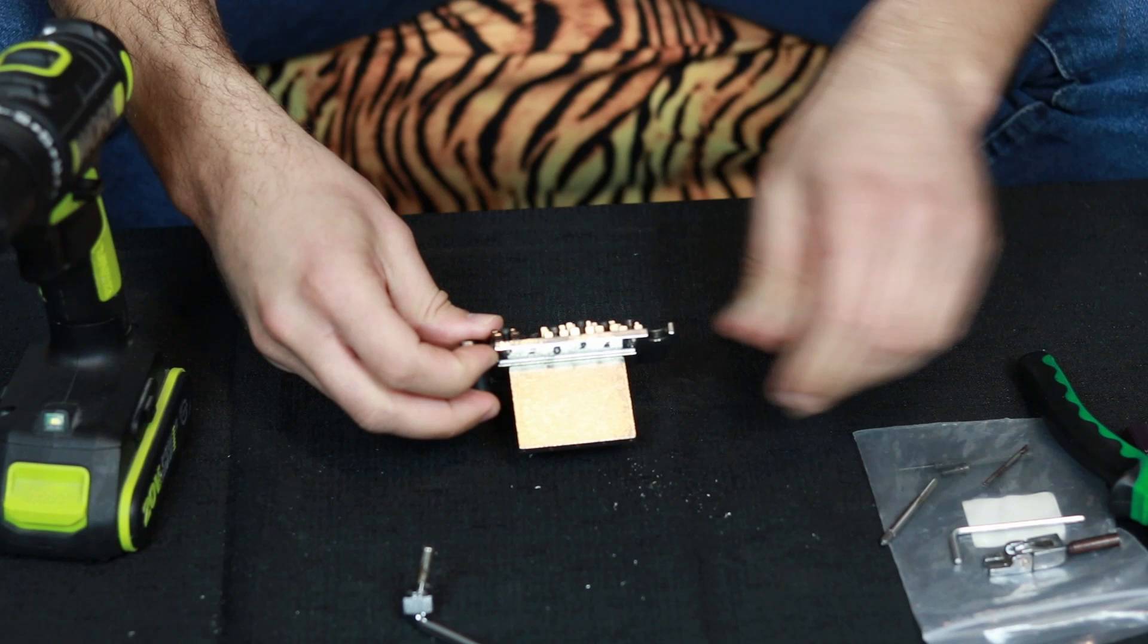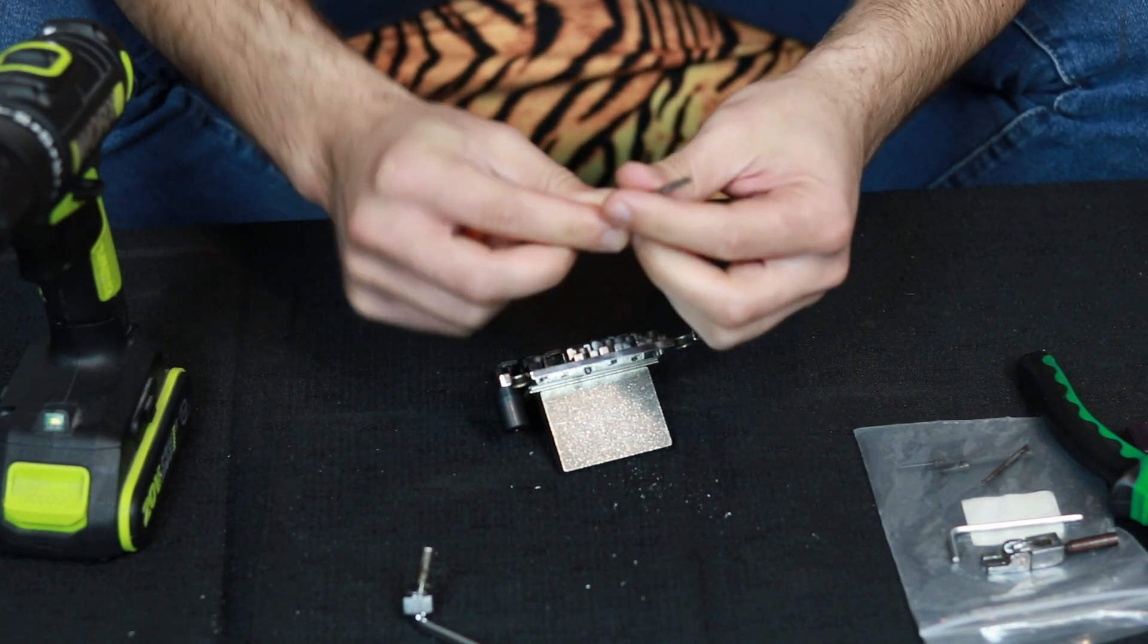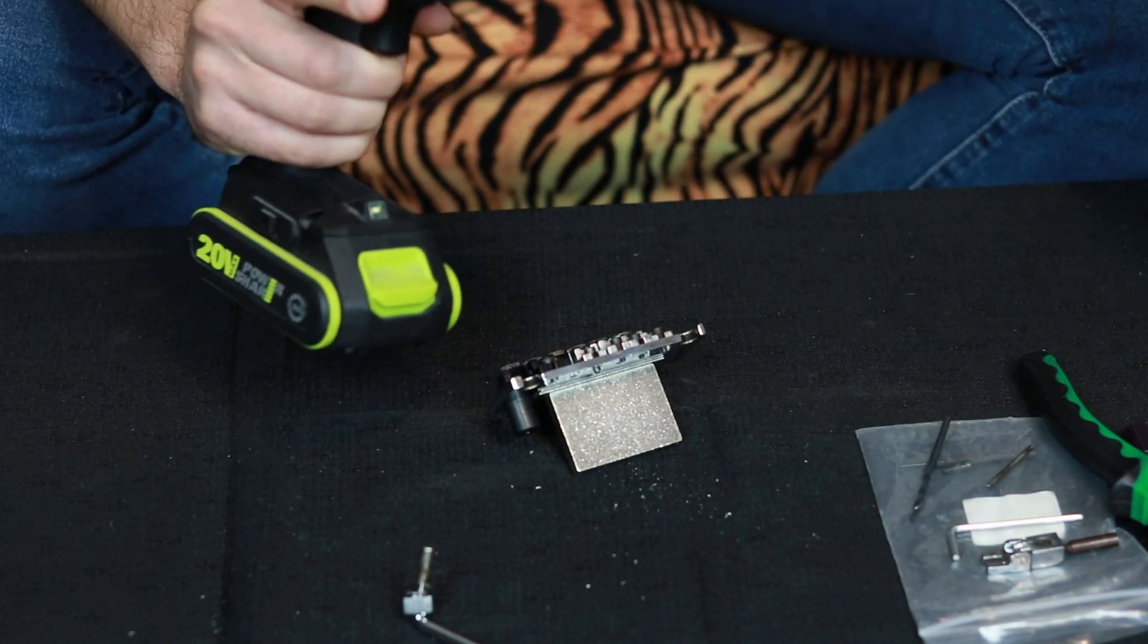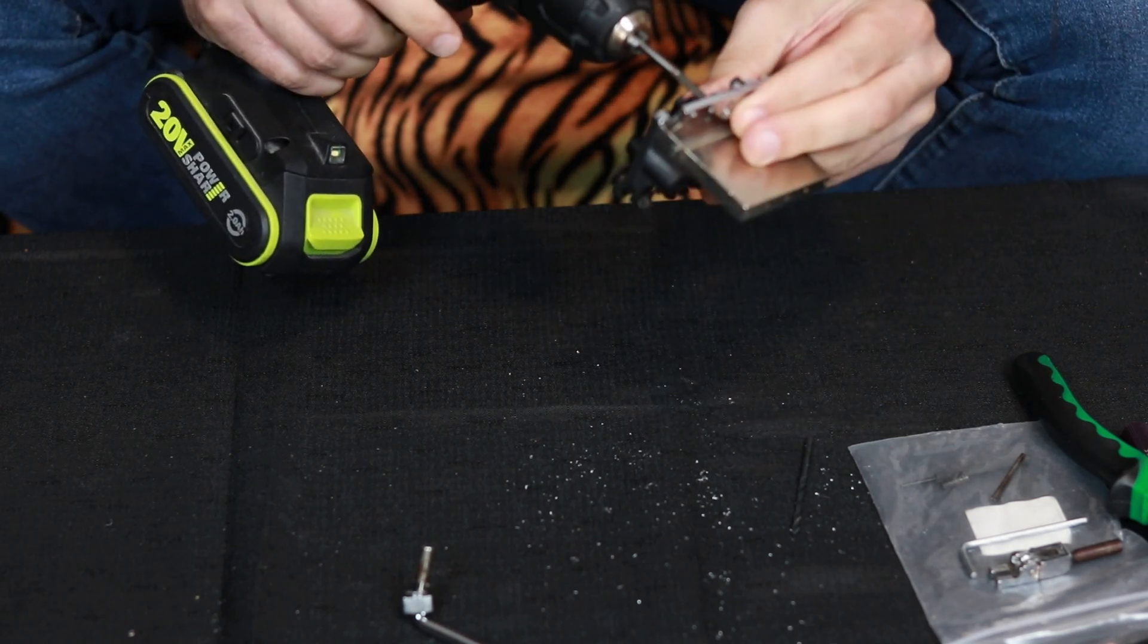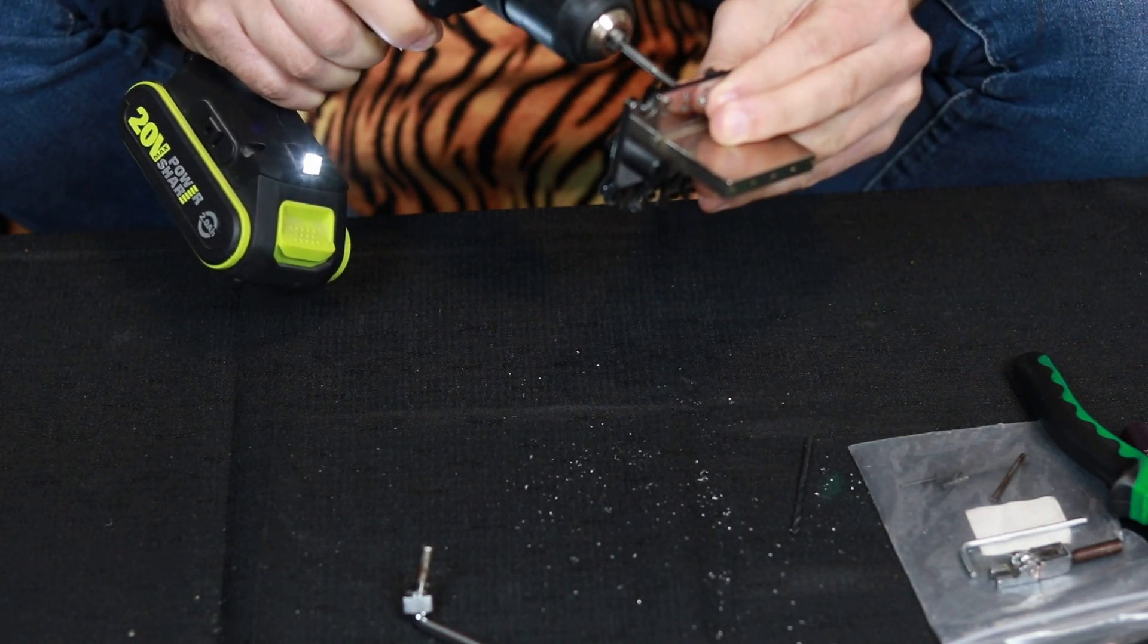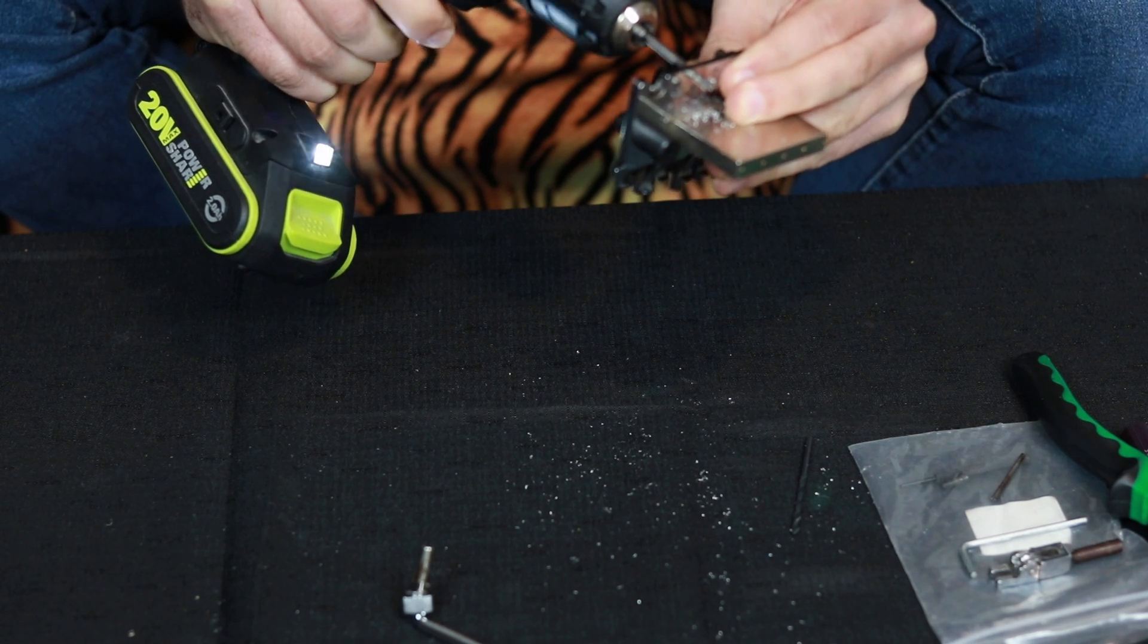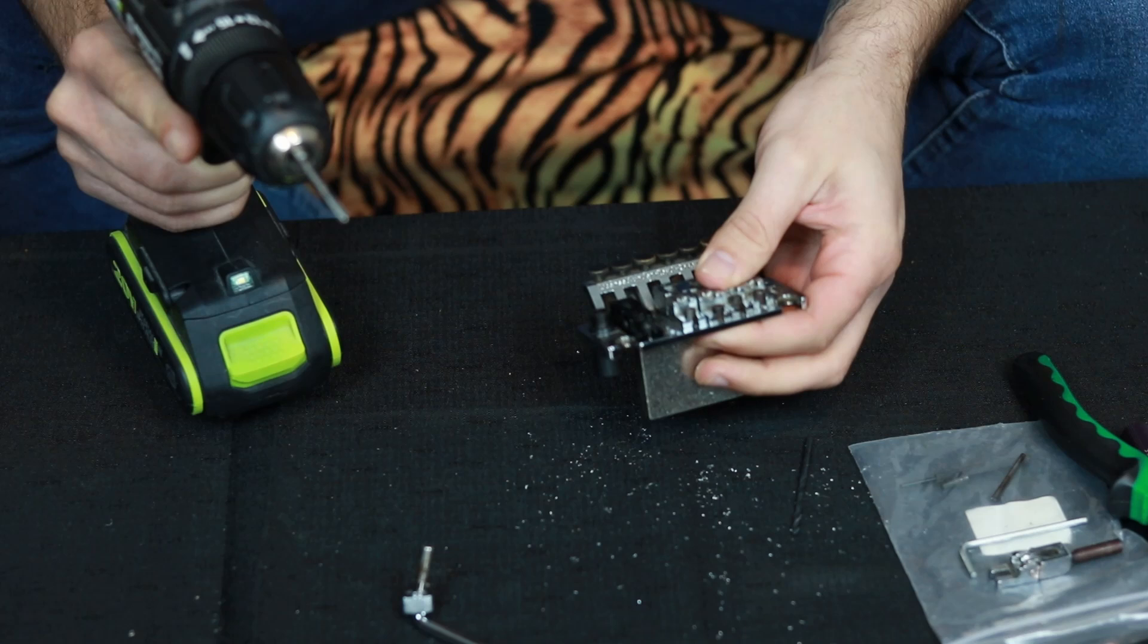And now we're going to take the thread tool and we're going to put it in our hand drill. Nice and easy. Alright, now it's tight in there. You want to apply some pressure and go all the way and back. That's it, we got our thread.